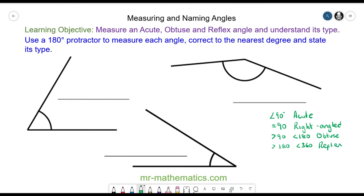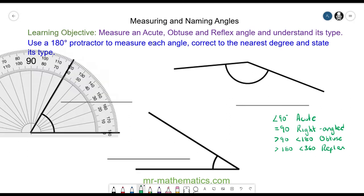So we are going to measure each of these three angles and label them with their correct name. The first thing we do is align our protractor with our crosshairs and identify the zero on the lower scale.